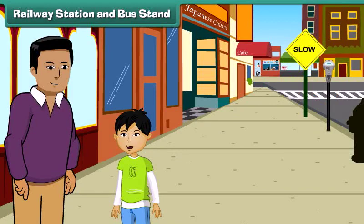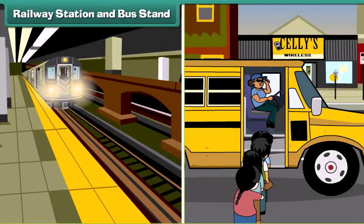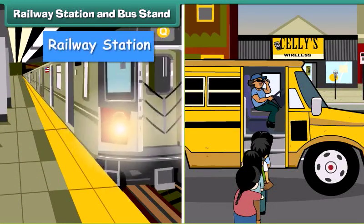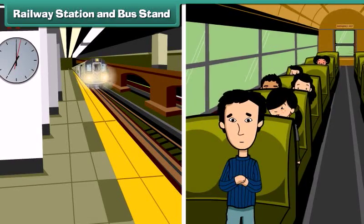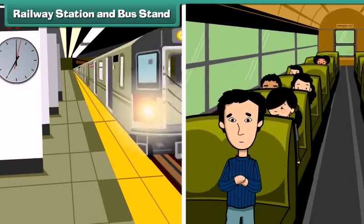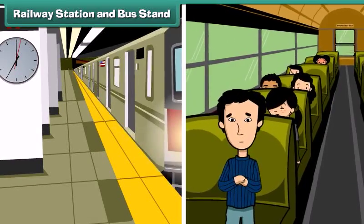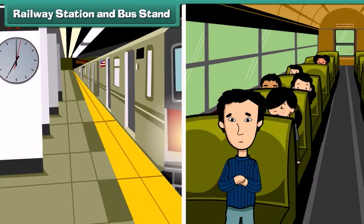Dad, I am getting tired now. Shall we go back home? Ok dear, let's go to the railway station. This is the railway station, and in front of it, that is the bus stand. People travel by trains or buses. Trains and buses connect our city to various places.